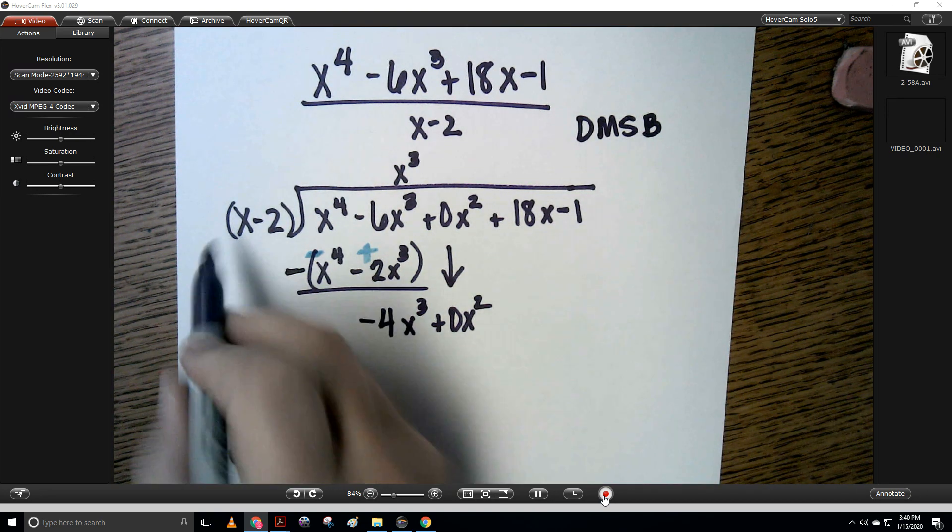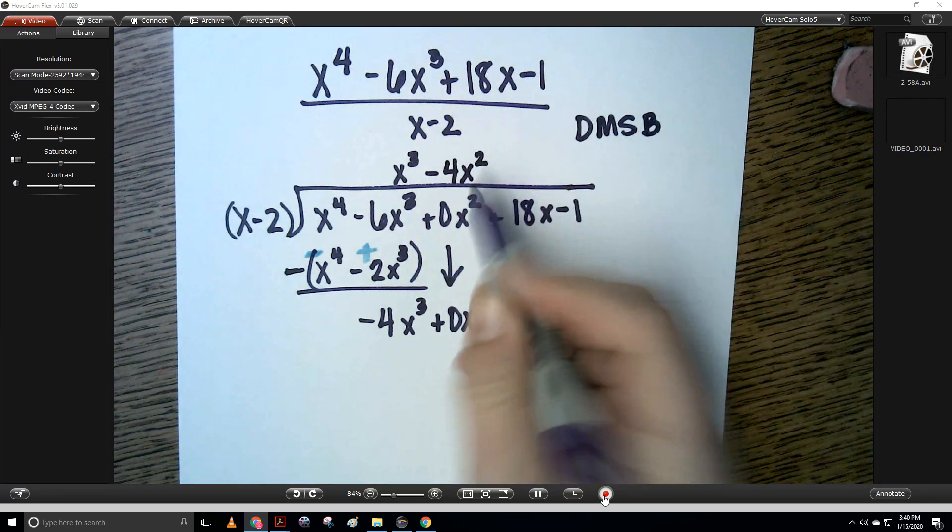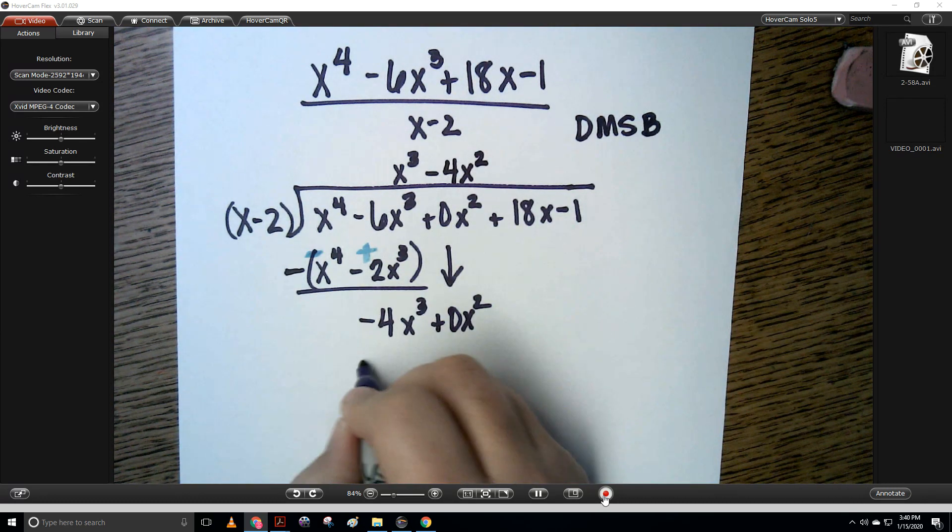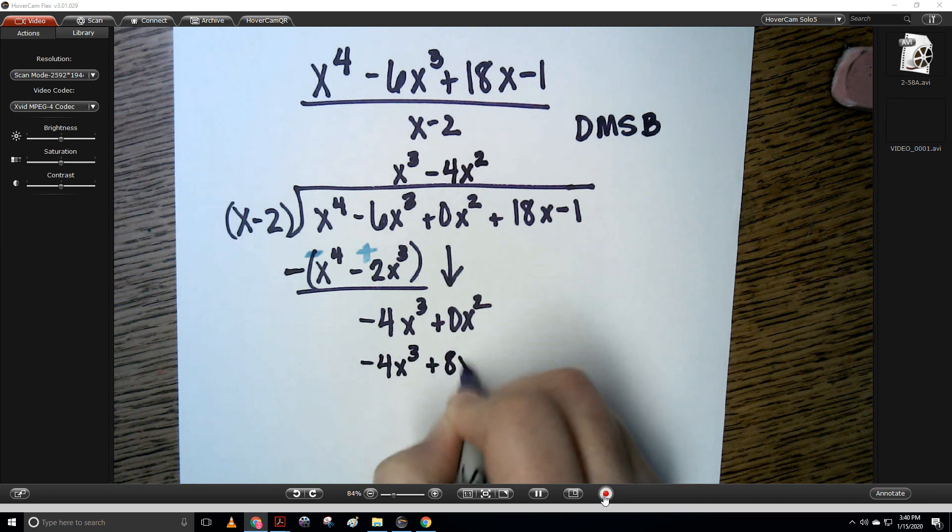So negative 4x cubed divided by x is negative 4x squared. Now we're ready to multiply. So that's going to give me a negative 4x cubed and a positive 8x squared.